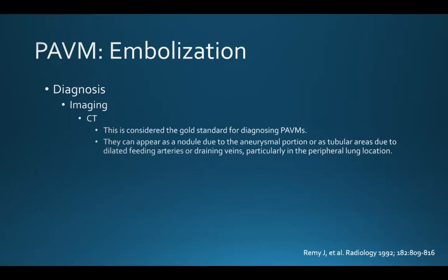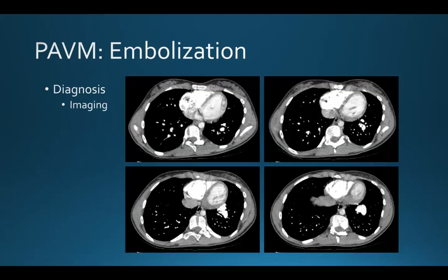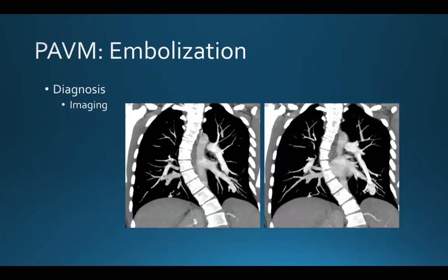CT is considered the gold standard for diagnosing pulmonary AVMs. They can appear as a nodule due to the aneurysmal portion or as tubular areas due to the dilated feeding arteries or draining veins, particularly in the peripheral portions of the lung. Here's an example of an axial CT showing a pulmonary AVM in the left lobe, where you can see the feeding artery, draining vein, and the aneurysmal portion of the AVM.